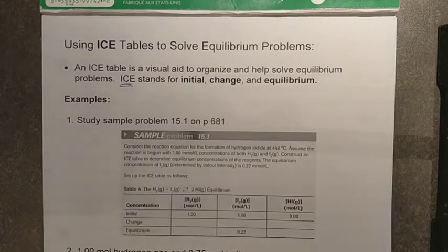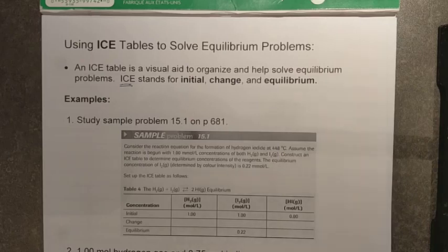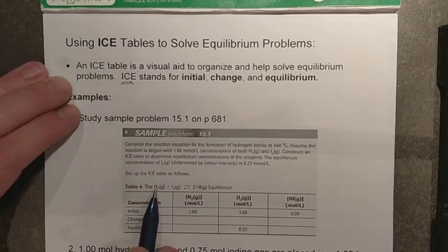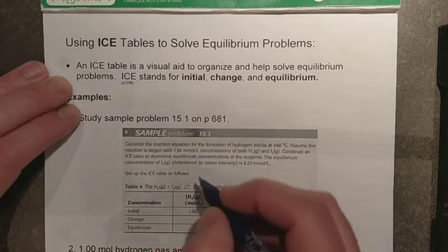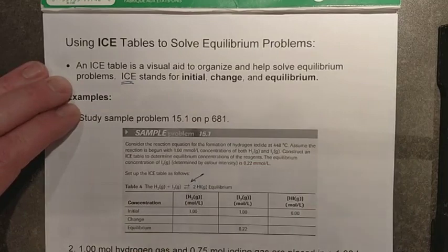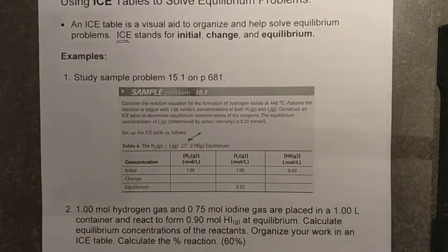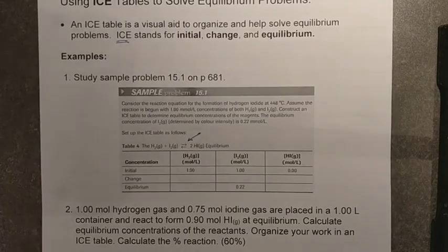How do we use these ICE tables? There's a guided solution in section 15.1 on page 681 that uses millimoles per liter. I'm going to replicate that one here. We are dealing with the hydrogen iodide equilibrium. Notice the change in the arrow — we now use a double arrow to illustrate that both a forward and a reverse reaction are taking place.